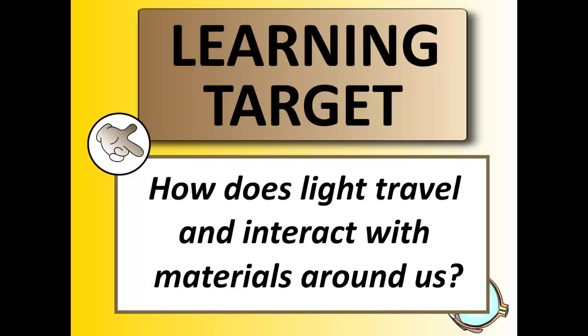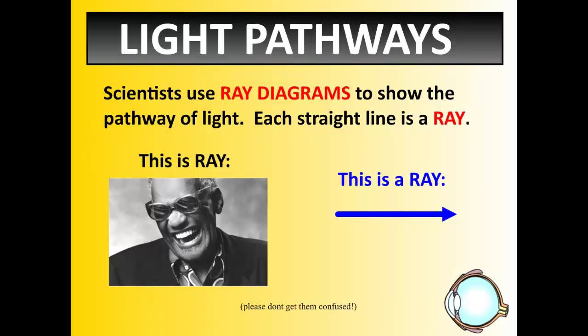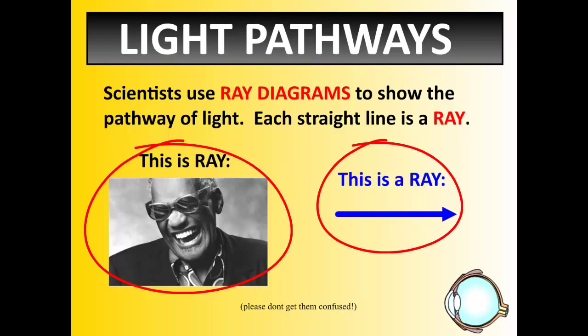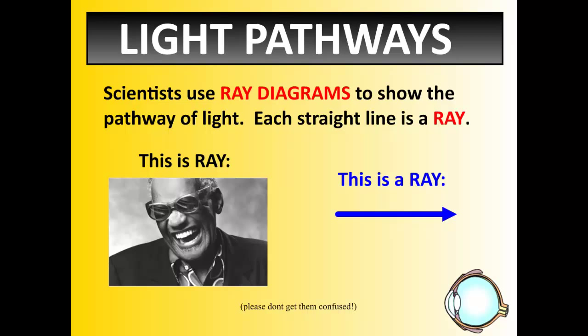So quick recap here. I'm sure some of this is going to be very familiar, so we'll go through this at a fairly brief and quick pace. Scientists have always standardized the use of ray diagrams to show the path of light. Each straight line represents a ray of light. The picture on the left is Ray, as in Ray Charles. The drawing on the right is a ray. We use the ray on the right to depict the pathway of light.